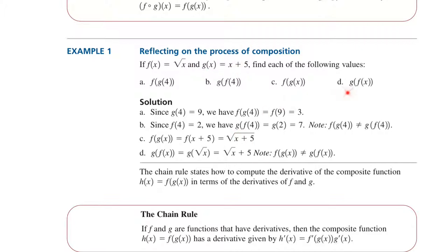For the last part, G of F of x: in function G, instead of x we put square root of x, and we have square root of x plus 5.